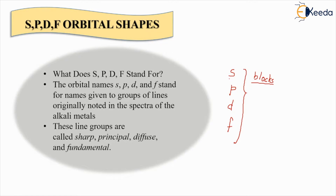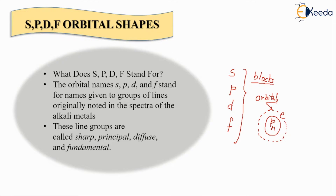Now what do we mean by orbital shapes? I have already shown you a proton and a neutron which are inside the nucleus and an electron which is revolving around the nucleus. When the electron is revolving around the nucleus, this particular path which it follows is known as an orbital. Because this is a 2D drawing of a very generalized atom, I have just drawn a circle here, but this orbital can have various shapes - S orbital, P orbital, D orbital, and F orbital.